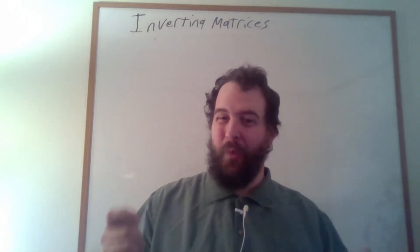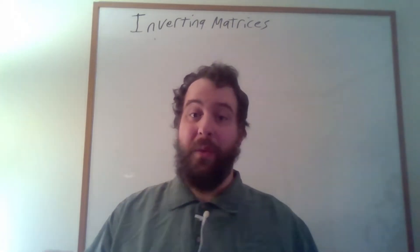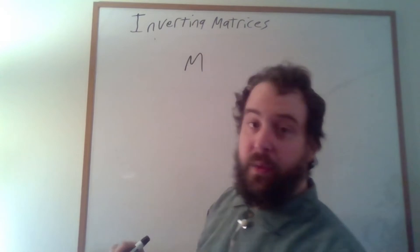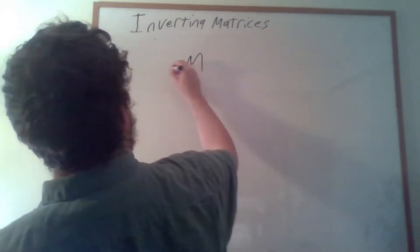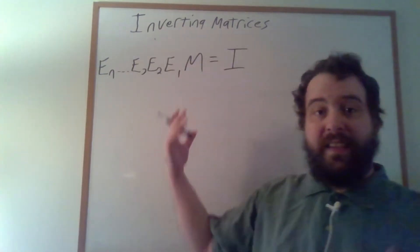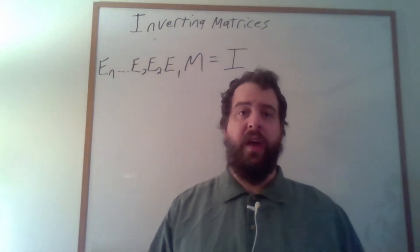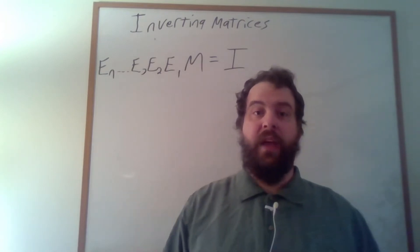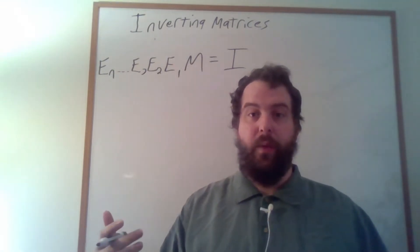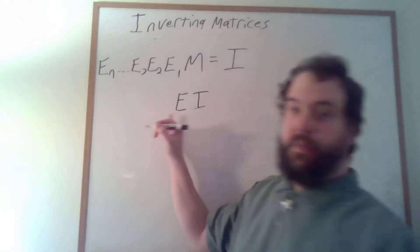There's only one square invertible matrix in reduced row echelon form and that's the identity matrix. So what we're actually doing here is we're starting off with a matrix M and we're applying our series of elementary row operations, and as a result we wind up getting the identity matrix. These elementary row operations aren't just operations on matrices or vectors — they're matrices in and of themselves. If we want to find out what the matrix is for a particular row operation, all we need to do is apply that row operation to the identity matrix.